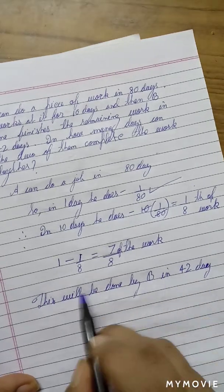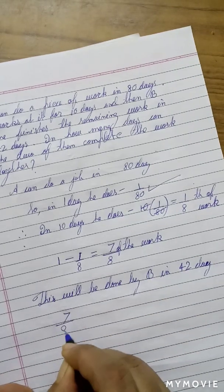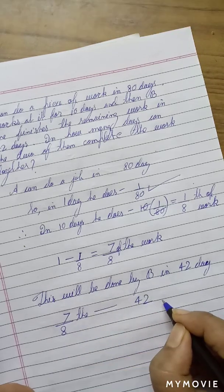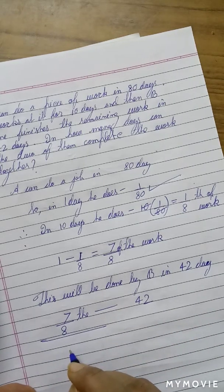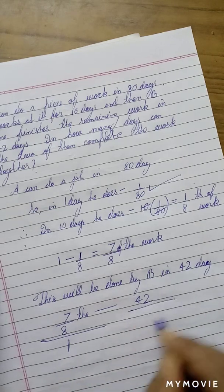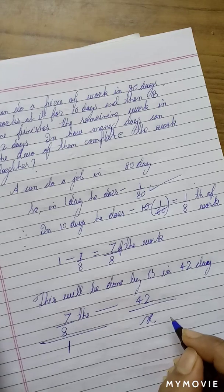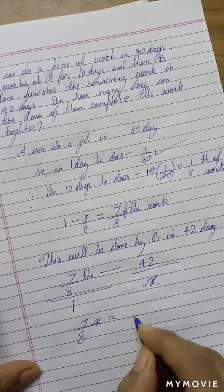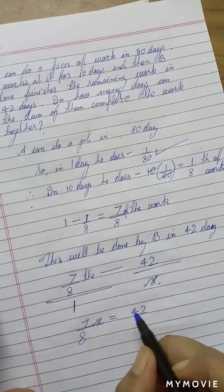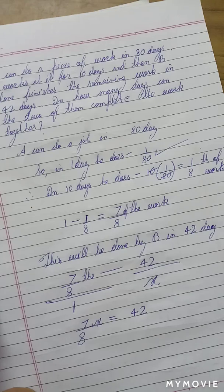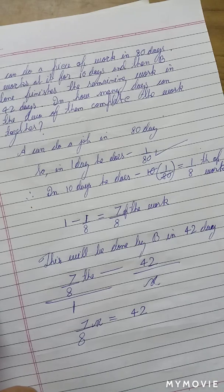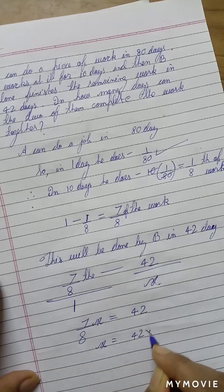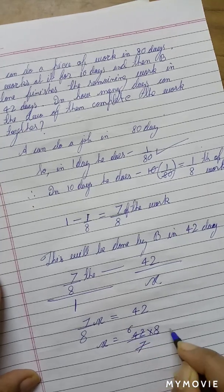B will do 7 eighth of the work in 42 days. If he had done the complete work, how much time would it have taken? Let's find out. We have 42 into 8 by 7, which is equal to 48.